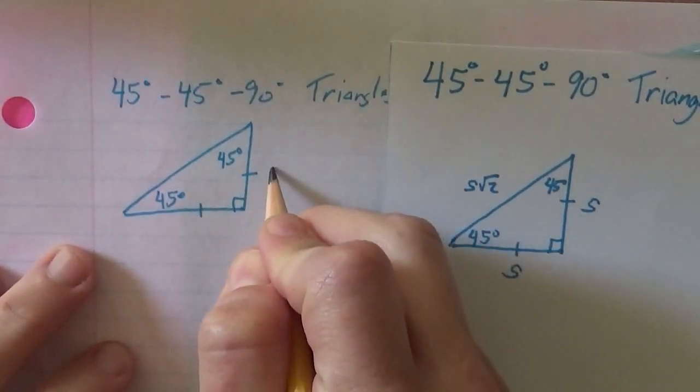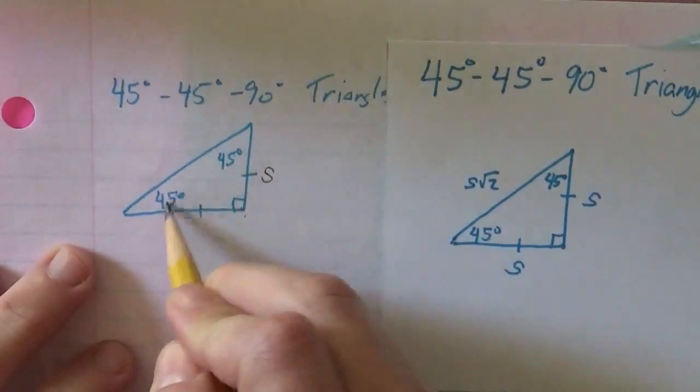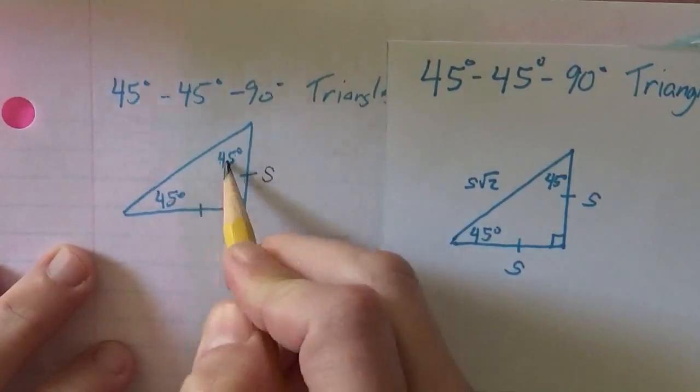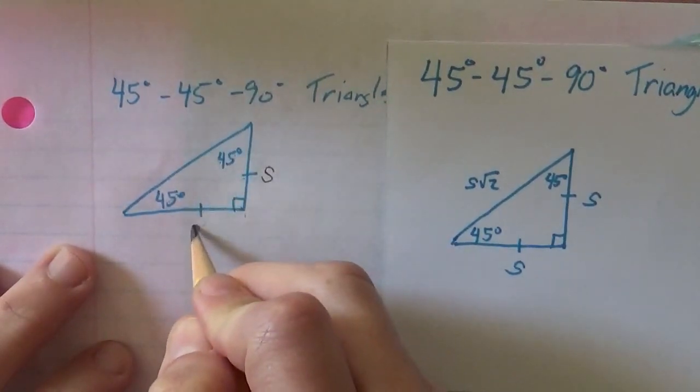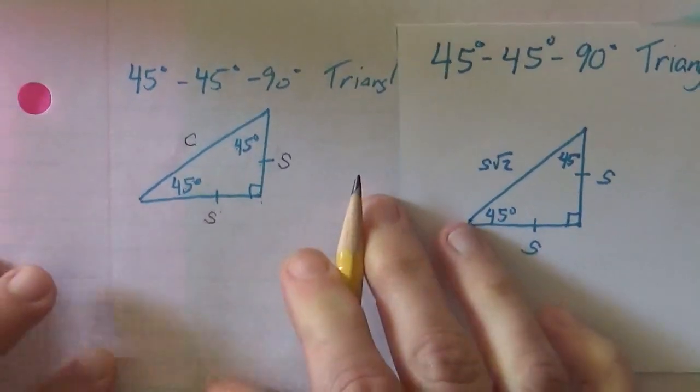So let's say I call one of these sides S, and because these angles are the same, these sides are the same, so this would also be an S. And if I'm looking for what this side is, I'll call it C for now.